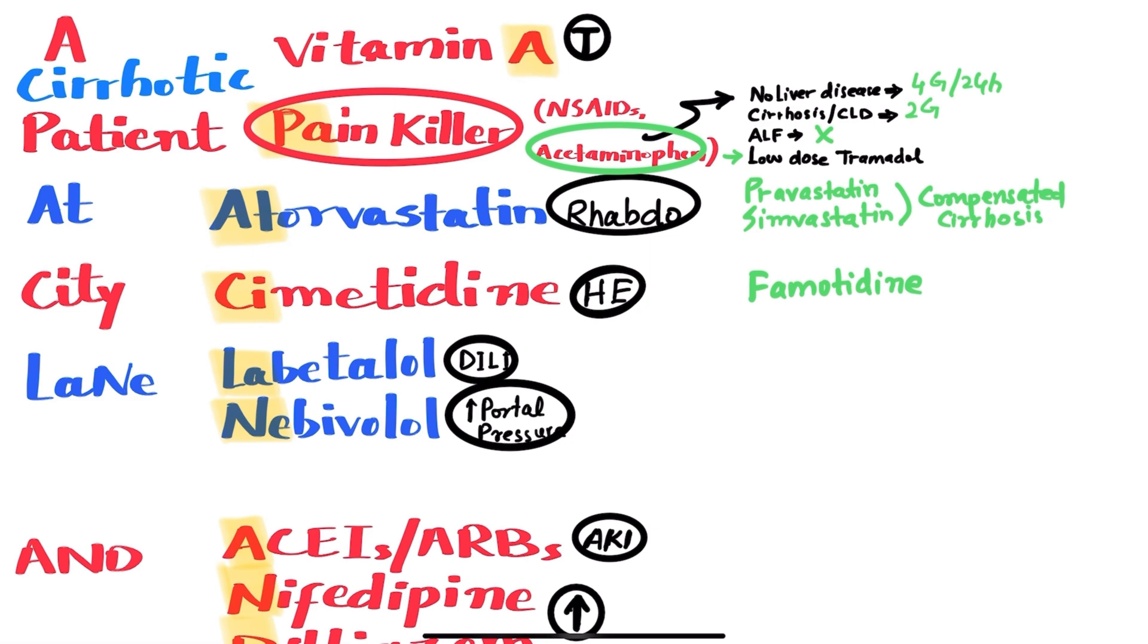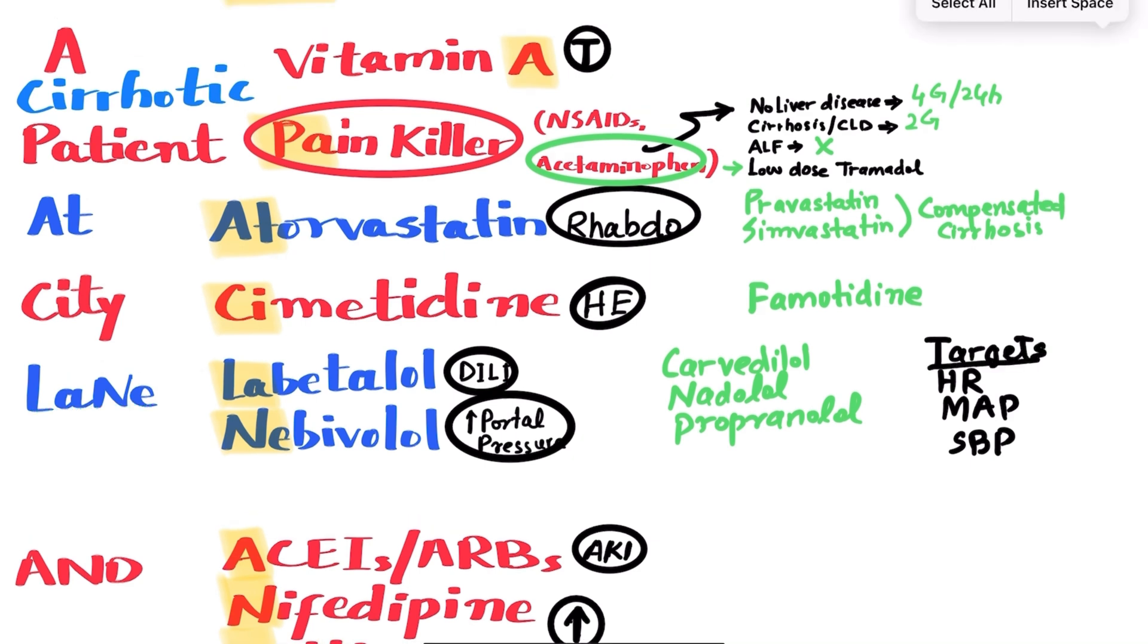Lane stands for labetalol, which is an alpha and beta blocker, and nebivolol, a selective beta-1 blocker. The beta blockers are often used in cirrhotic patients to prevent the bleeding from esophageal varices. The three beta blockers commonly used are carvedilol, nadolol, and propranolol, which are effective for both primary and secondary prevention.